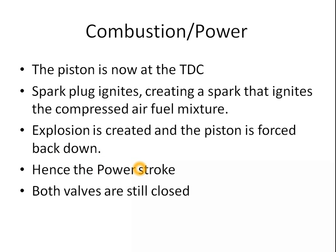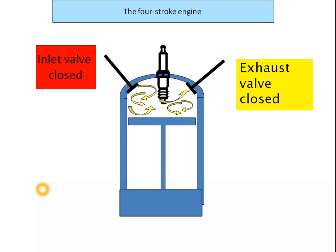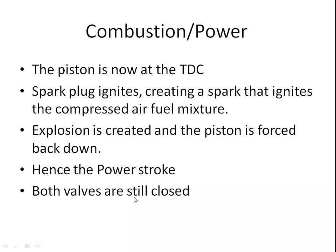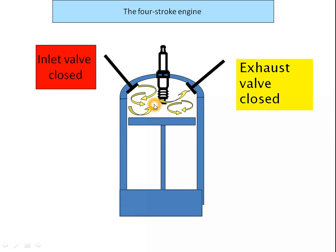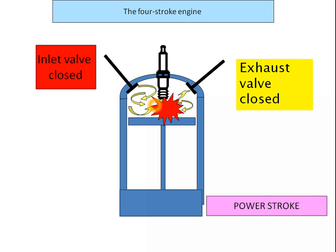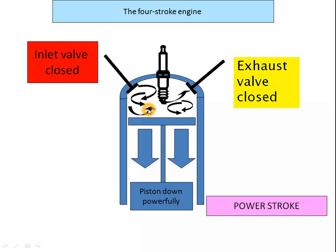Since the power is generated in the power stroke, both valves are still closed. The compressed mixture is burned, creating high pressure and high temperature at that place. So the piston is pushed downwards. The total power acts on that piston, which is connected to the crankshaft — this is the output power of the engine.